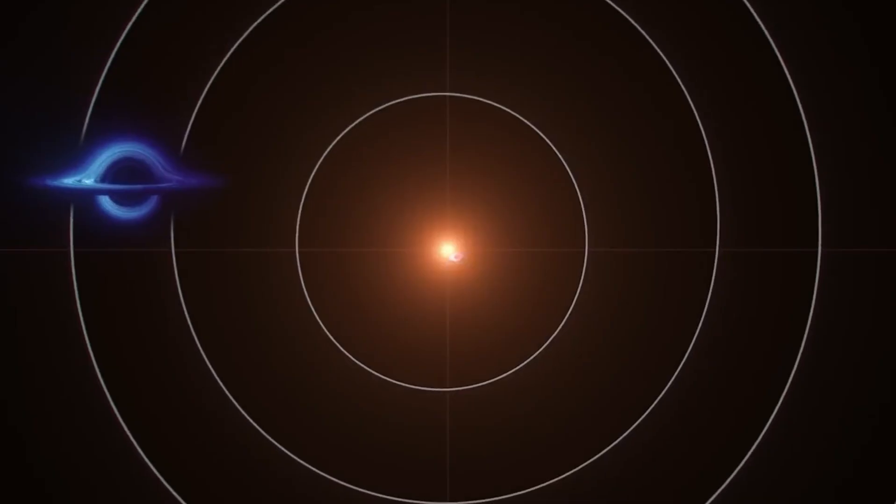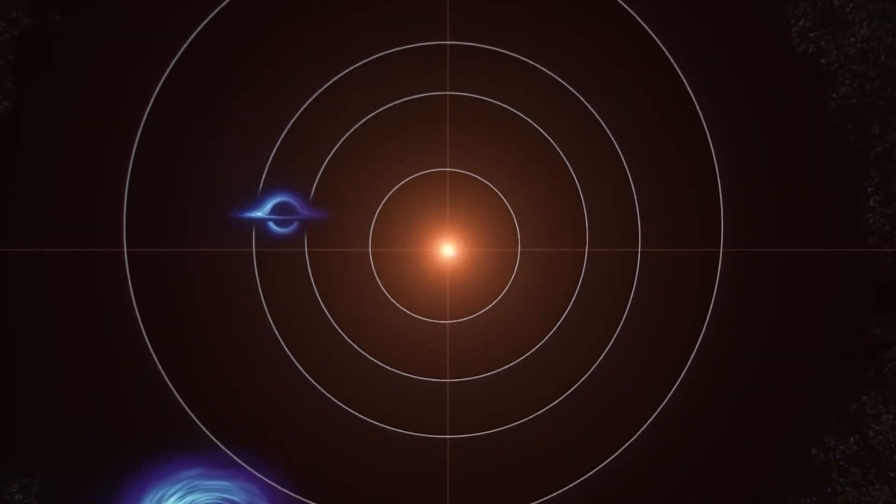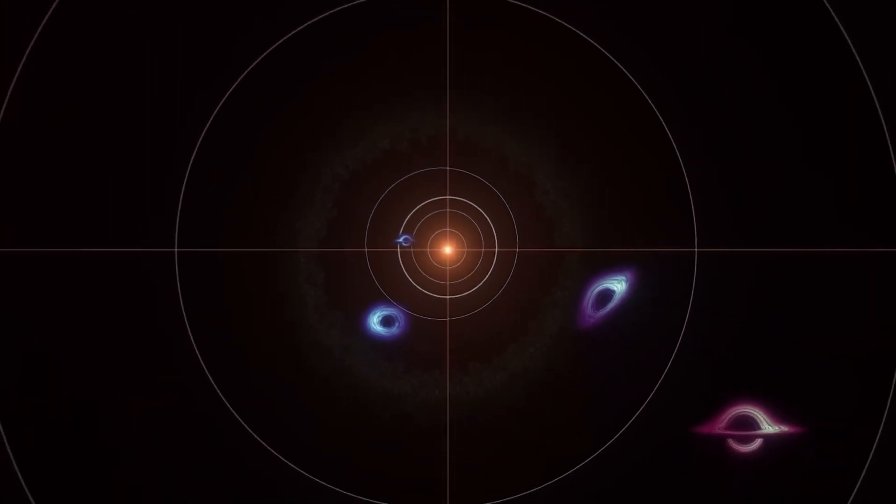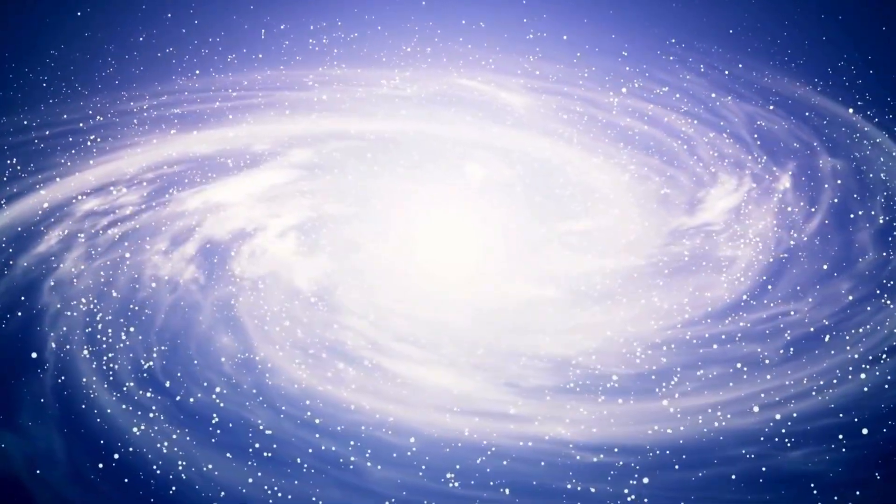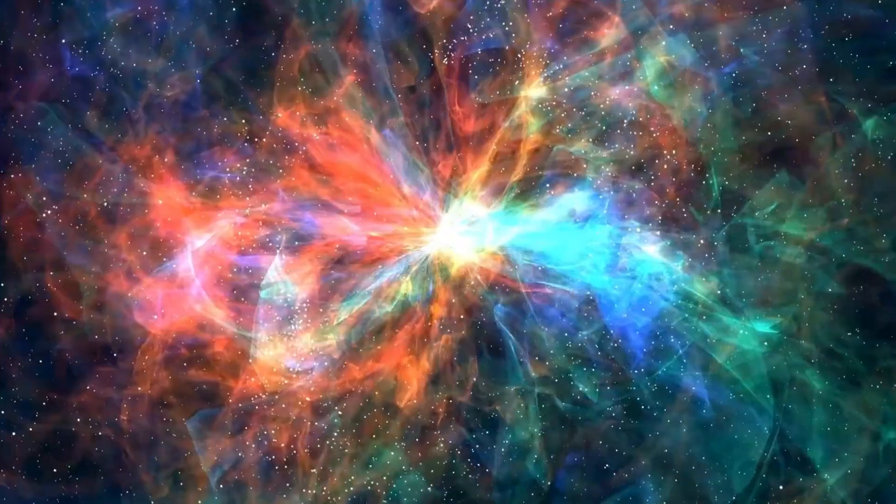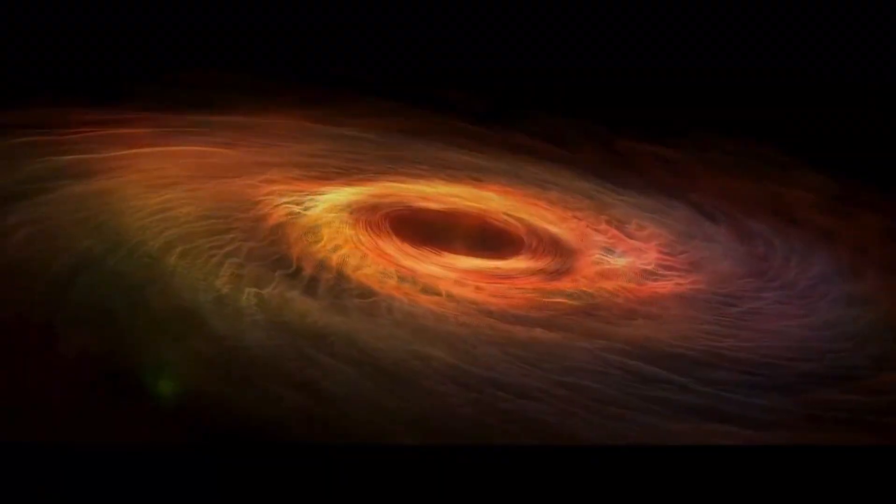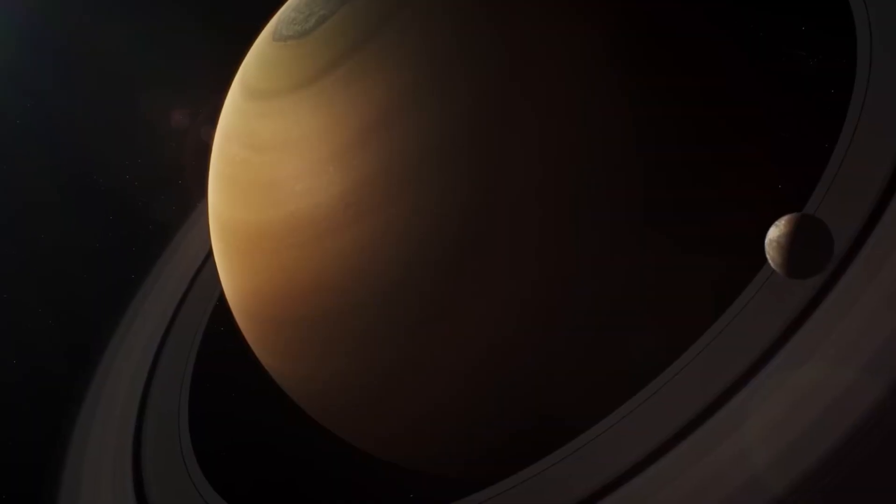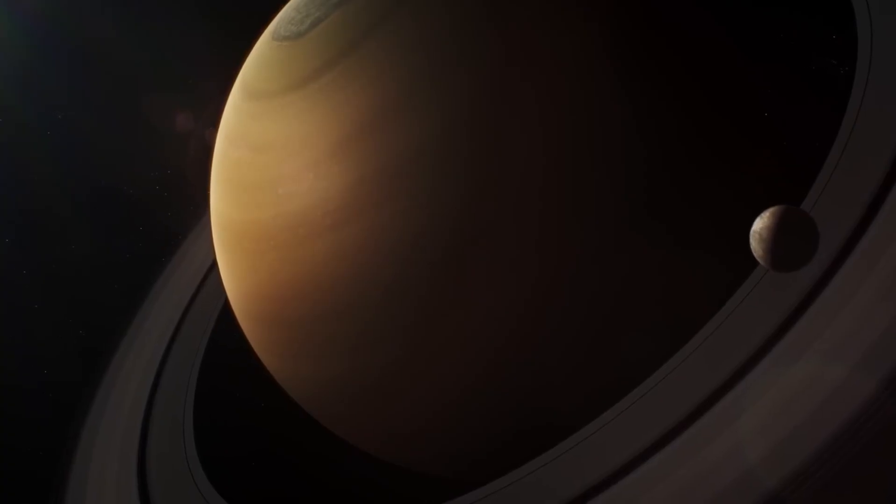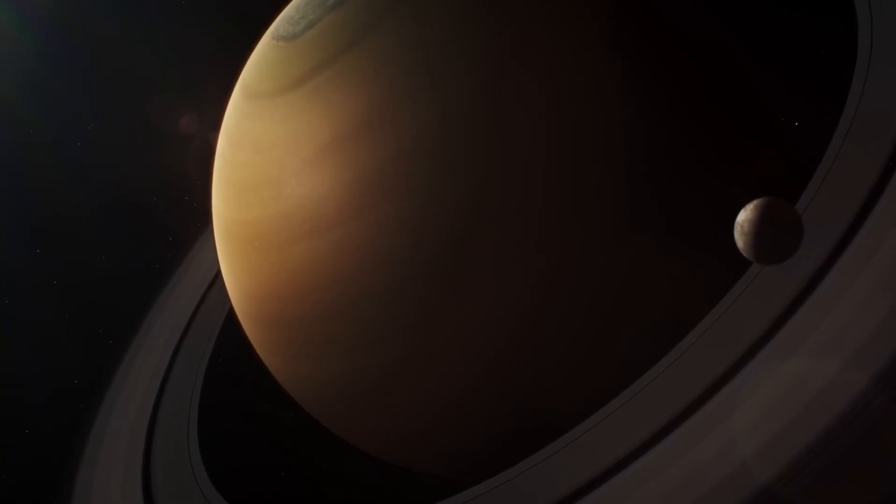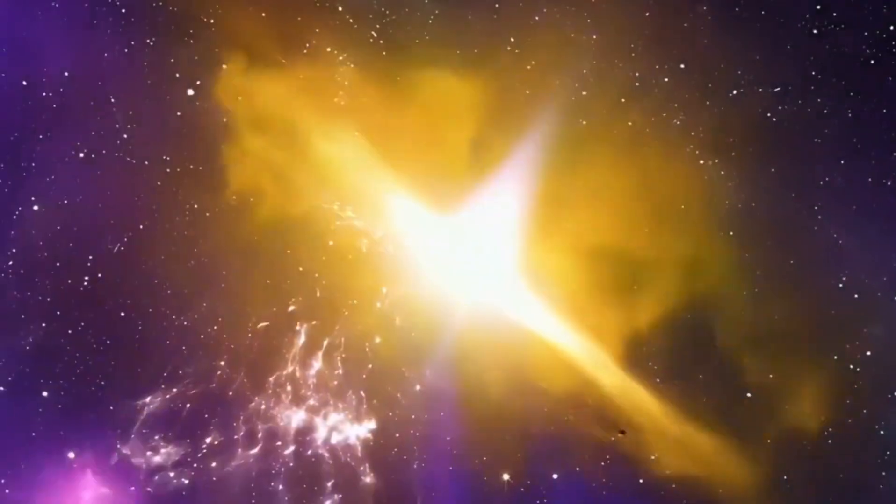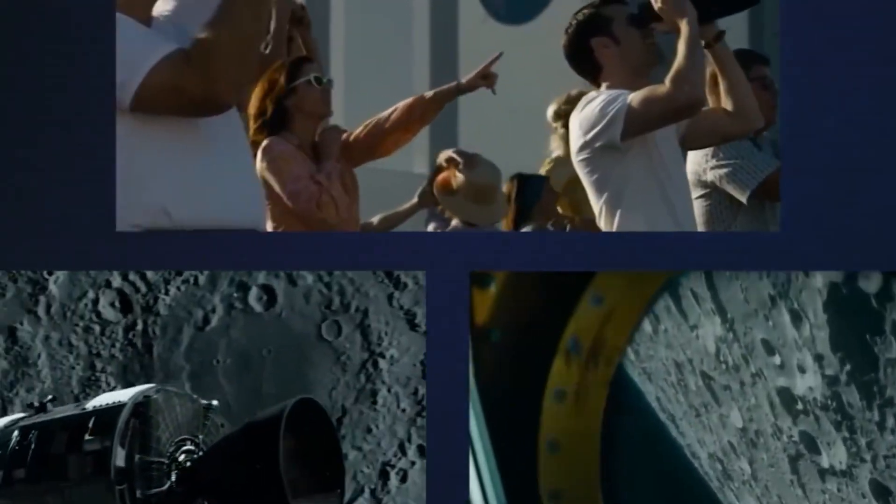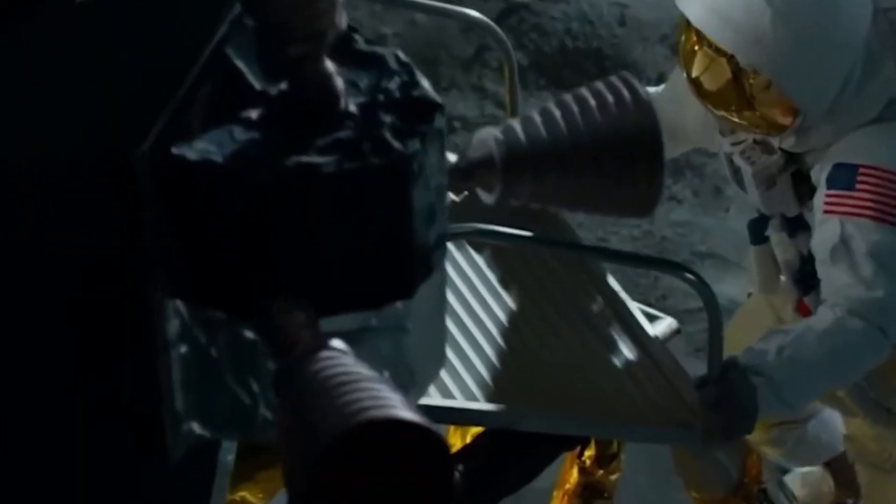One section of a recent JWST deep field image was quietly withheld for eight weeks. When it was finally released, the data showed something no one could explain. Renowned physicist Brian Cox has hinted that this image might be more than just cosmic dust. What if we're looking at the first indirect evidence that we're not alone in the universe? Today, we're exploring the grounded scientific clues that suggest an extraordinary possibility. This isn't science fiction or conspiracy theories. This is about real telescope data and questions that have left the scientific community searching for answers.